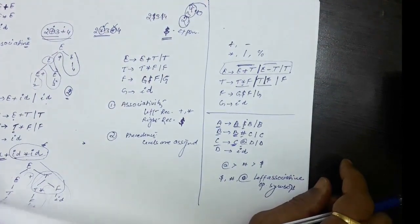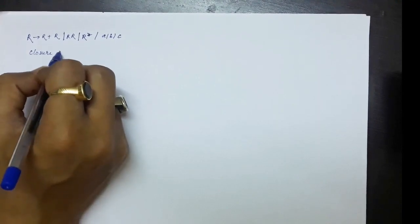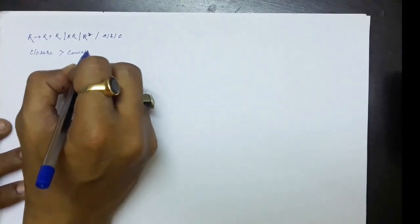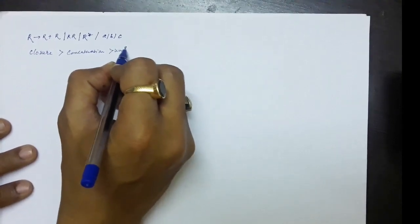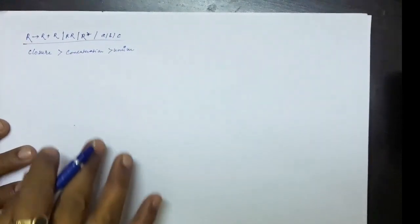Now if we have to write production rules for regular expressions: the ambiguous grammar is R produces R plus R, or RR, or R star, or a, or b, or c. I leave this as an assignment for you to write the unambiguous grammar, knowing that closure has the highest precedence, followed by concatenation, and union has the least precedence.